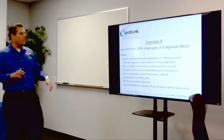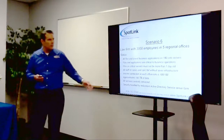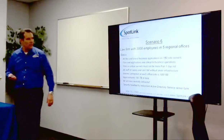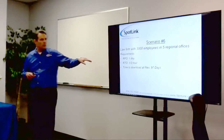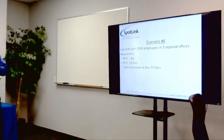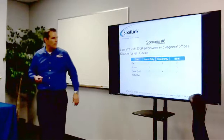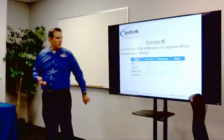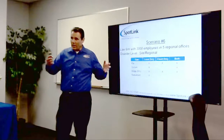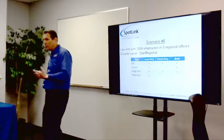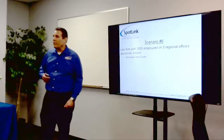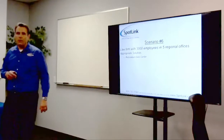Scenario six: large law firm with 3,000 staff across five regional offices. 100 terabytes of data. All staff are salaried and can't bill without server infrastructure. RPO: one day. RTO: half an hour. Time to download all files: 97 days — which tells you right away that most cloud-only solutions aren't viable. For device-level failure, local machine virtualization works, as do redundant data centers. For a local site disaster, only a redundant data center will meet the half-hour RTO. Very expensive and complex to set up, but at this scale it's a small cost relative to overall business operations.